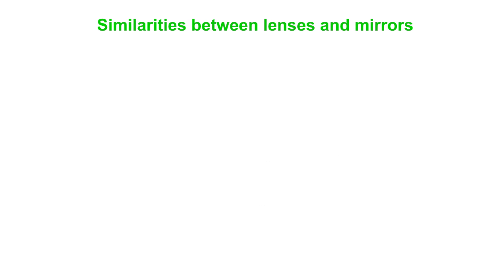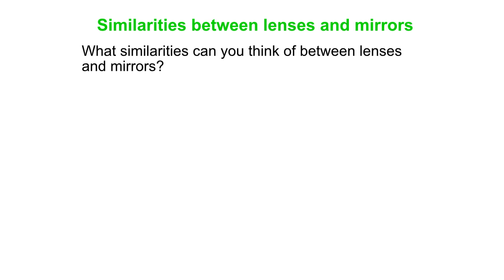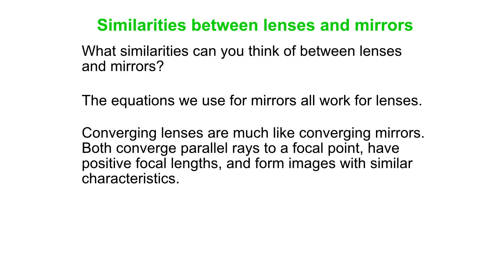How about similarities between lenses and mirrors? Again, you might want to pause the video here just for a minute and write your own list. The equations we use for mirrors all work for lenses. Converging lenses are much like converging mirrors. They both converge parallel rays to a focal point. They have positive focal lengths and they form images with similar characteristics.